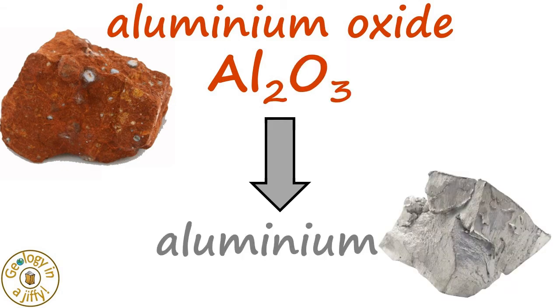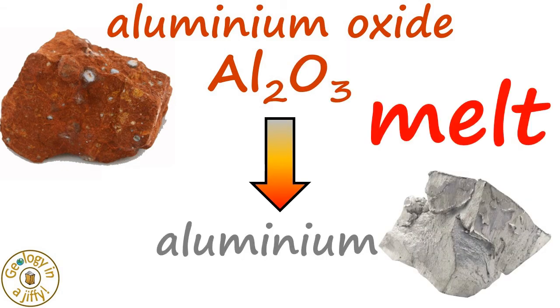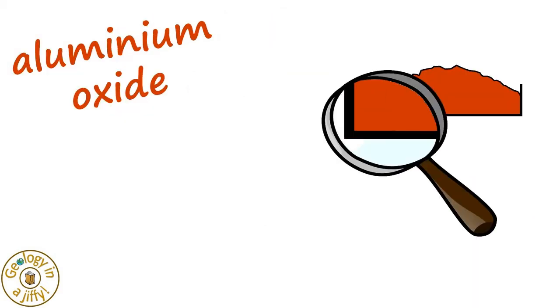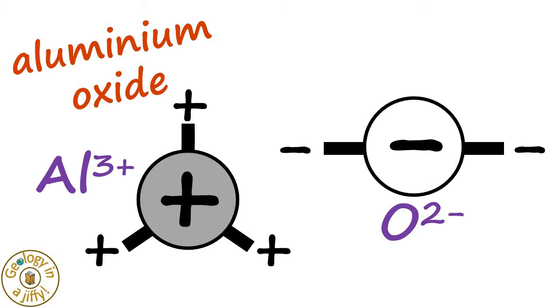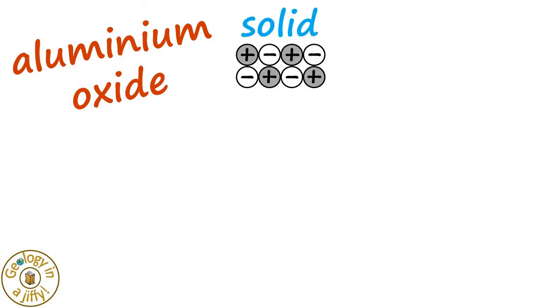These are all strongly bonded together, meaning we have to melt the ore to extract the aluminium. When we take a closer look into aluminium oxide, we see the ions locked in their solid crystalline state.